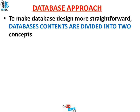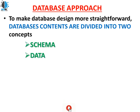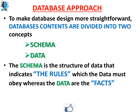To make database design more straightforward, database contents are divided into two concepts: schema and data. Schema is the structure of data that indicates the rules which the data must obey, whereas data are the facts. Schemas define how the data should be stored in the database, what parameters or rules the data must follow to enter the database, and these rules are visible to users in the form of validation controls or instructions.